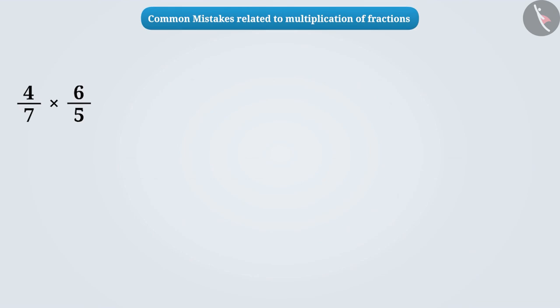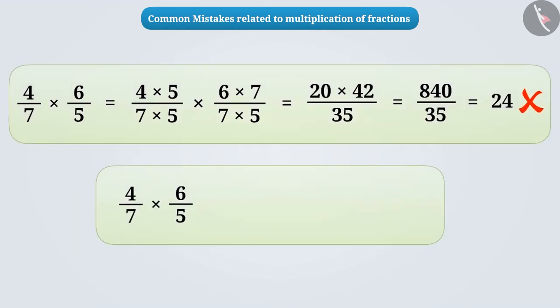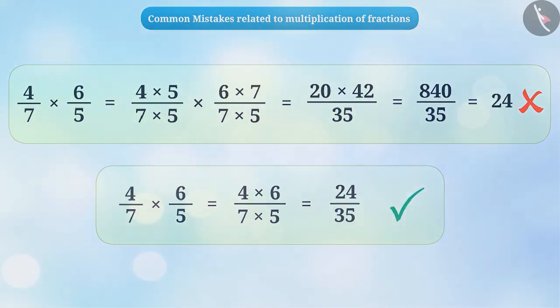If the denominators of the two fractions are not equal during multiplication, then some children try to make them equal. This is a misconception. To multiply two fractions, the numerators and the denominators are separately multiplied and written in place of the numerator and the denominator of the result.